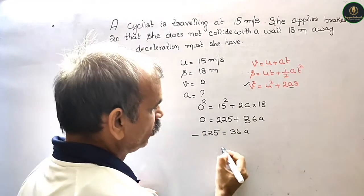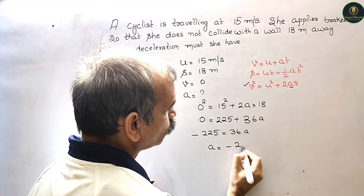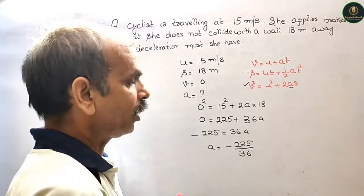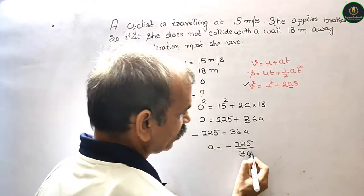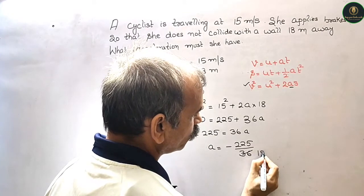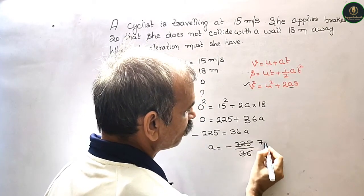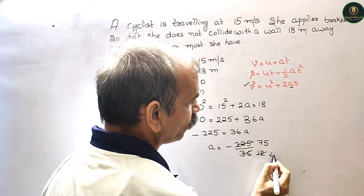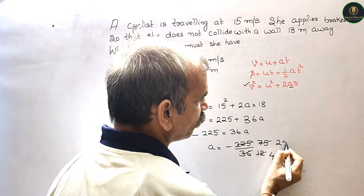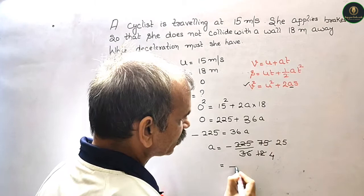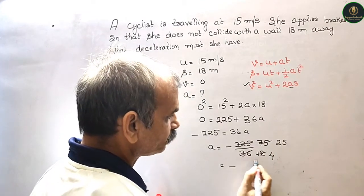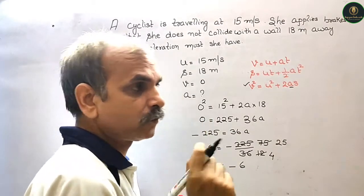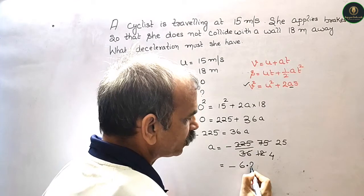So now this will be minus 225 by 36. So now this will be 3 into 12, 3 into 75. Again this will be 3 into 4, so this will be 25. Now minus 25 by 4.